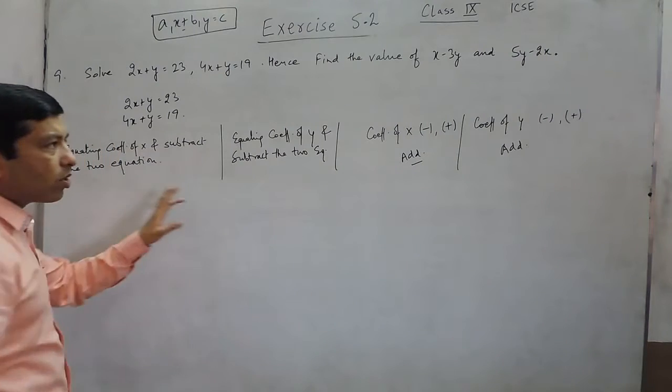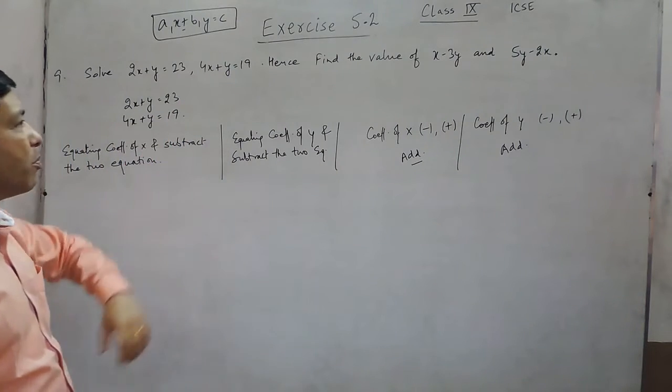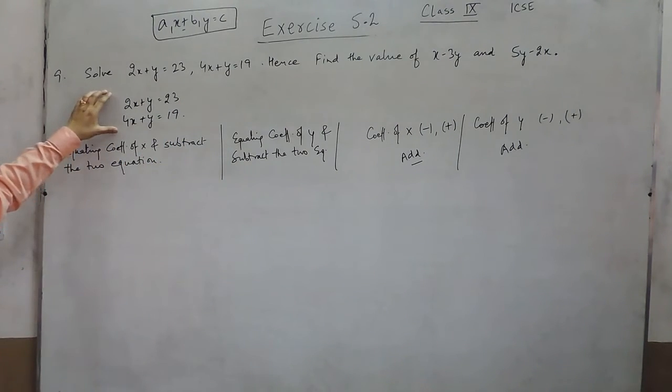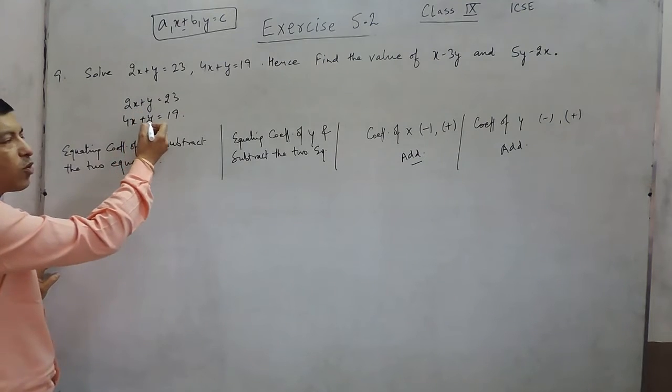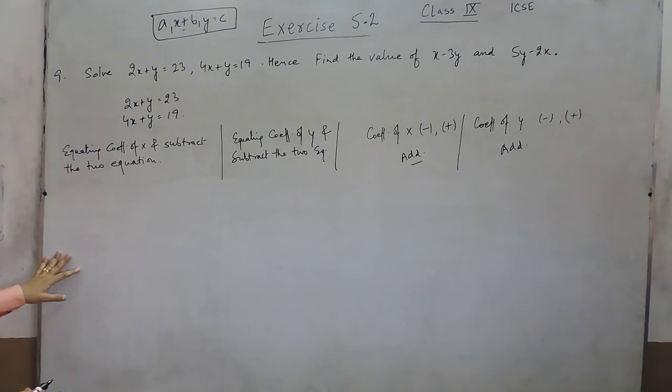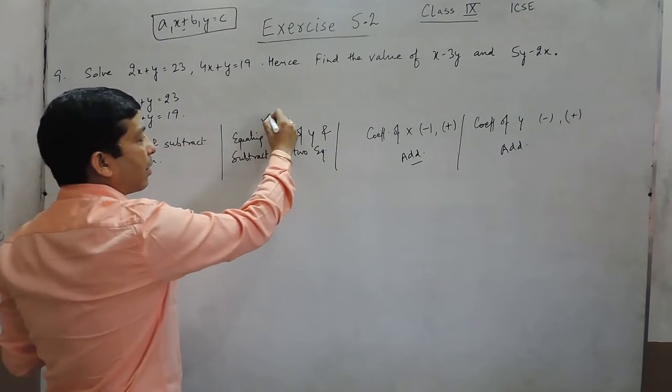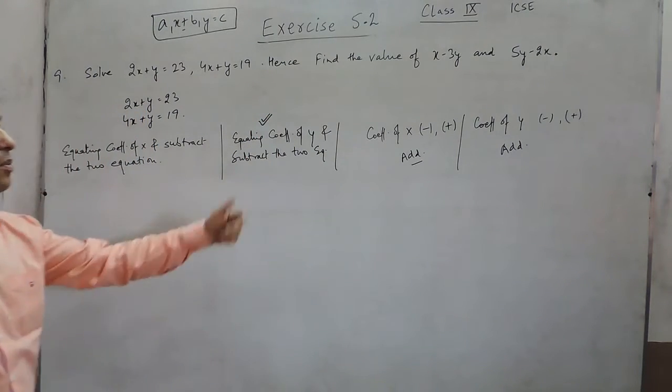We have to see that out of these four which looks most convenient to us. Here we know that the coefficient of y are already equal and both are positive, so it means we can apply this. This is the simplest form.